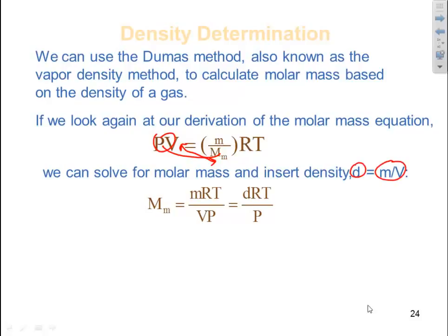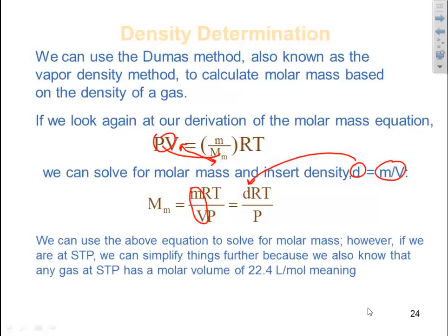Now if we plug in mass over volume and we plug in density for it, we have a new equation. Molar mass is equal to density times RT divided by P. We can use the above equation to solve for molar mass. However, if we are at STP, we can simplify things even further because we know that any gas at STP has a molar volume of 22.4 liters per mole, meaning your molar volume is equal to 22.4 liters per mole, which is equal to some volume over n, which is equal to RT over P, just rearranging your PV equals nRT equation.